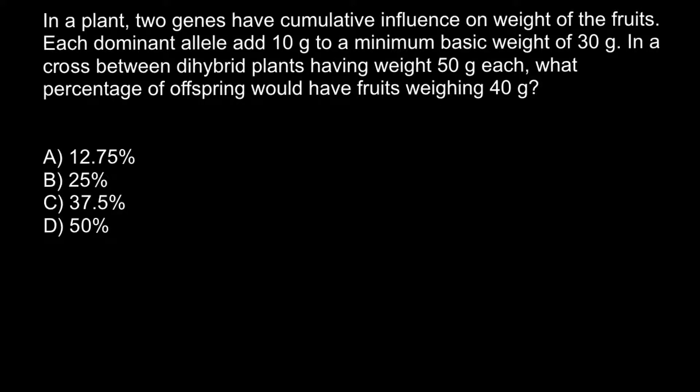Hello and welcome to Nikolai's genetics lessons. Today I got a problem from one of my subscribers. In a plant, two genes have accumulative influence on weight of the fruits. Each dominant allele adds 10 grams to a minimum basic weight of 30 grams. In a cross between dihybrid plants having weight of 50 grams each, what percentage of offspring would have a fruit weighing 40 grams? This is a classical problem of additive trait.